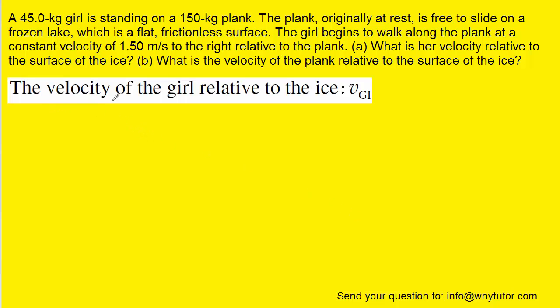We're going to begin this question by letting the velocity of the girl relative to the ice be v sub gi. Because it's a relative velocity, we can let v gi equal the velocity of the girl relative to the plank plus the velocity of the plank relative to the ice. The question gives us v sub gp — the velocity of the girl relative to the plank — which is stated as 1.5 meters per second, so we can plug in 1.5 for that term.